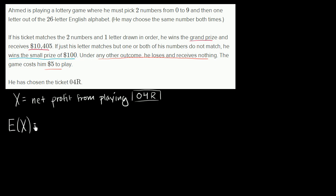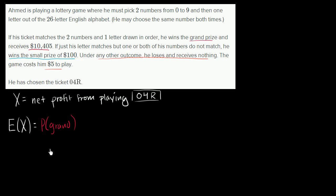Expected value is the probability of each outcome times the net profit from that outcome. So there is the probability of getting the grand prize, times his net payoff from the grand prize.